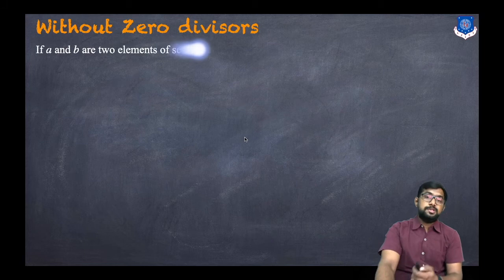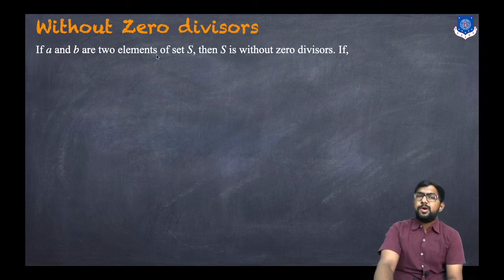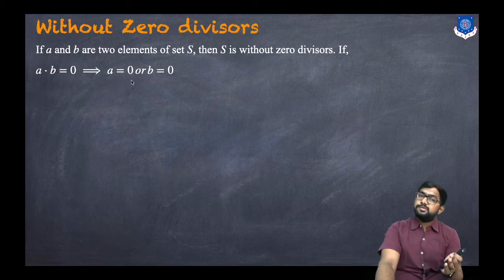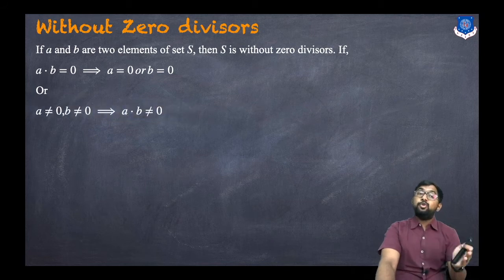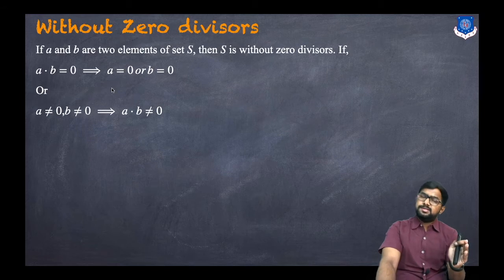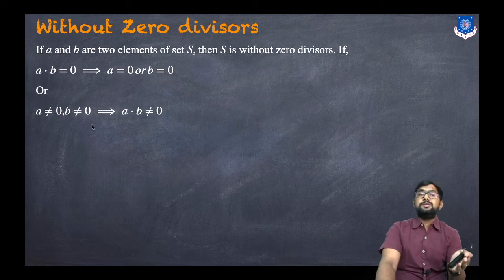Now let us discuss what is a ring without zero divisors. If a and b are two elements of the set S, then S is without zero divisors if a·b = 0 implies a = 0 or b = 0. Equivalently, if both a and b are not zero, then a·b is not zero. So if the product is zero, then at least one of them must be zero.